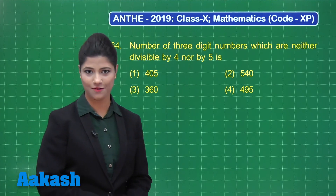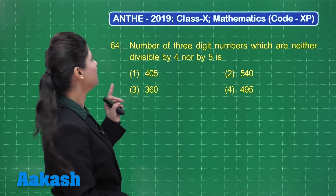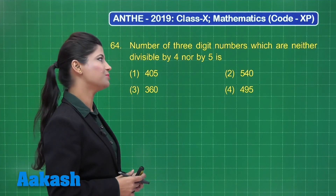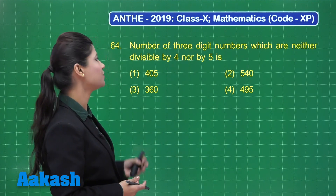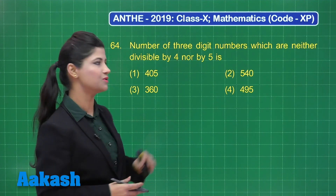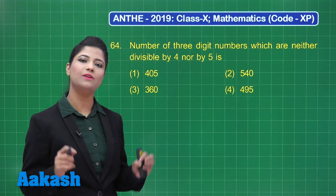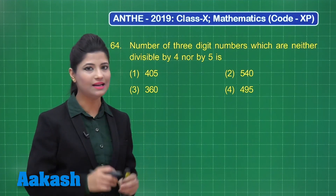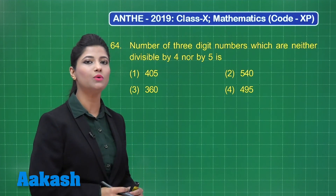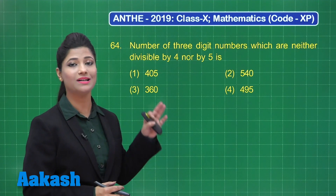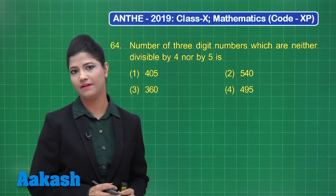Let us discuss question number 64. It states that the number of 3-digit numbers which are neither divisible by 4 nor by 5 is — out of these options. We have a total of 900 three-digit numbers, and we need to figure out those numbers which are neither divisible by 4 nor by 5.